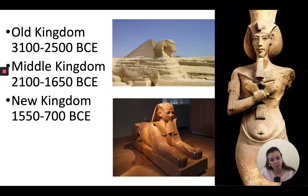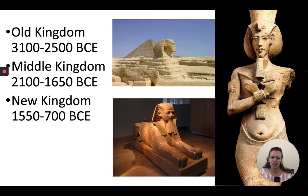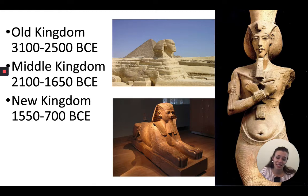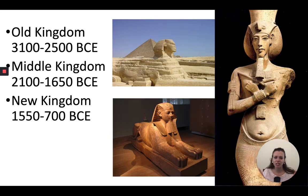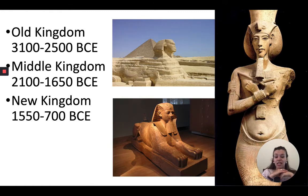Finally, we have the New Kingdom from 1550 to 700 BCE. We see a reestablishment of Egyptian rule. Egyptians conquer many neighboring civilizations, including the Nubians to the south and the Syrians to the northeast. One of their goals is to create buffer zones so they don't get conquered again. Slavery is used among the elite. There's a brief 20-year blip called the Amarna period, from 1353 to 1336, where they briefly became monotheistic and everything about art changed. At the end of the New Kingdom, a power struggle between government officials divides the empire into smaller, weaker states that get conquered.